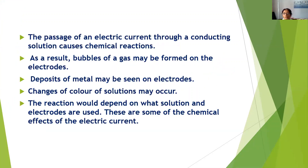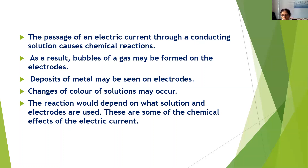The passage of an electric current through a conducting solution causes a chemical reaction. Due to this, we can see bubbles of gas formed on the electrodes, deposits of metals on electrodes, or changes in the color of the solution. These reactions depend on what solution and what type of electrodes are used in that electrolysis. So the chemical effects of electric current are: bubbles or gas formed on electrodes, deposits of metal on electrodes, and changes in color of solution.